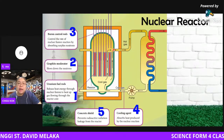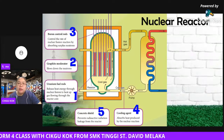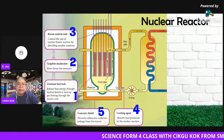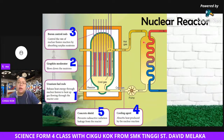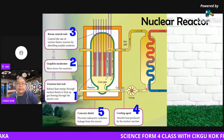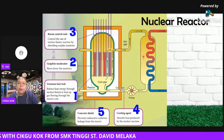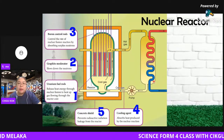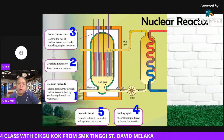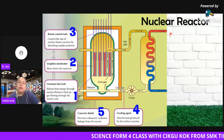The fifth component is the concrete shell, which covers the entire nuclear reactor to prevent radioactive radiation — alpha, beta, and gamma rays — from leaking outside. The concrete shell uses lead and copper, which can absorb radiation. To summarize the reactor: uranium rod, graphite moderator, boron control rod, cooling agent, and concrete shell. The high energy produced passes through tubes — hot gas heats the liquid, which becomes steam.